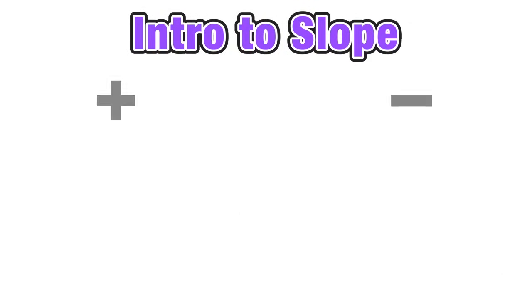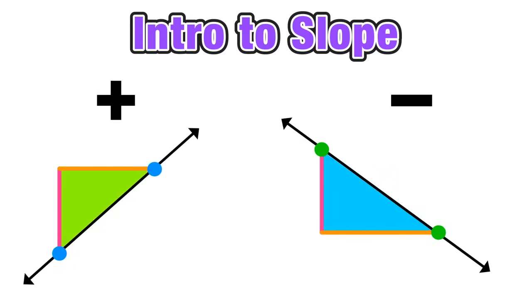So let's take a few moments to visualize the difference between applying rise over run to positive and negative slopes. Again, notice that the line with the positive slope is increasing from left to right, and that the line with the negative slope is decreasing from left to right.